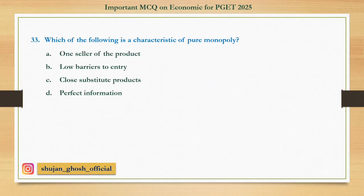Question number thirty-three: Which of the following is a characteristic of pure monopoly? Option A: one seller of the product; B: low barriers to entry; C: close substitute products; D: perfect information. Answer: one seller of the product.